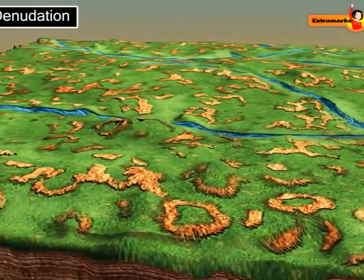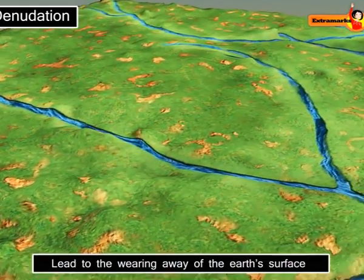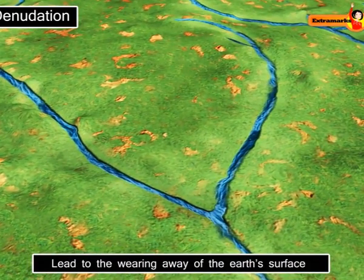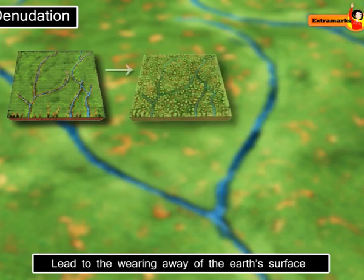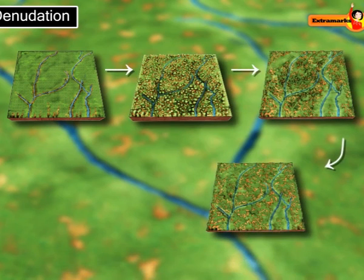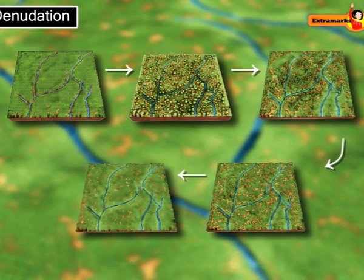Denudation is the long-term sum of processes that cause the wearing away of the earth's surface, leading to a reduction in elevation and relief of landforms and landscapes.